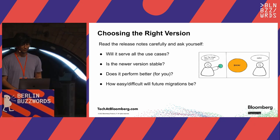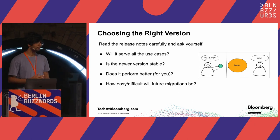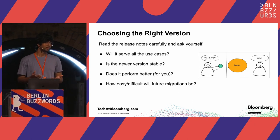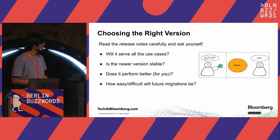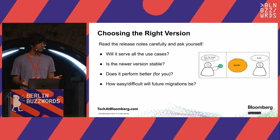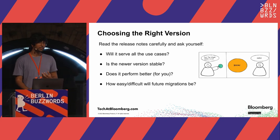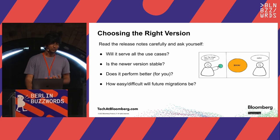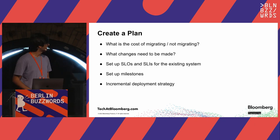Will the new version serve all of my use cases? Is the new version stable? Does it perform better for me? Because most of the time newer upgrades do perform better, but if you're using some niche feature, it might not be performing better. Also, how easy or difficult might it be to migrate to other future versions? Should you wait for the next major release, or should you just migrate to this minor one? Those are some questions that you should ask.